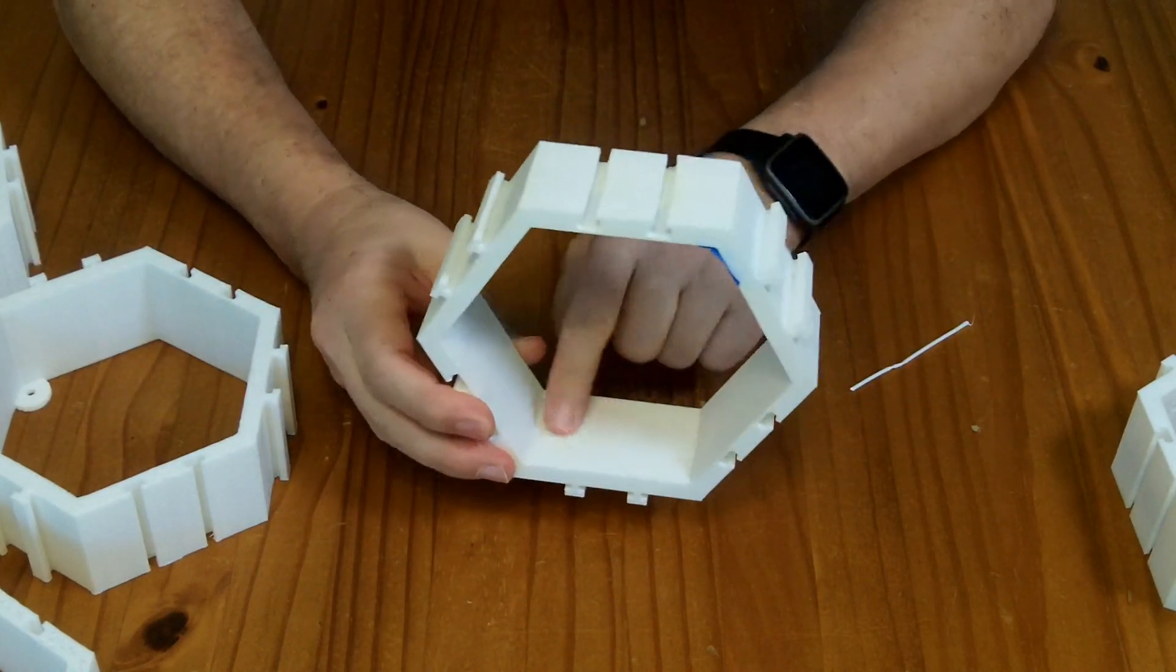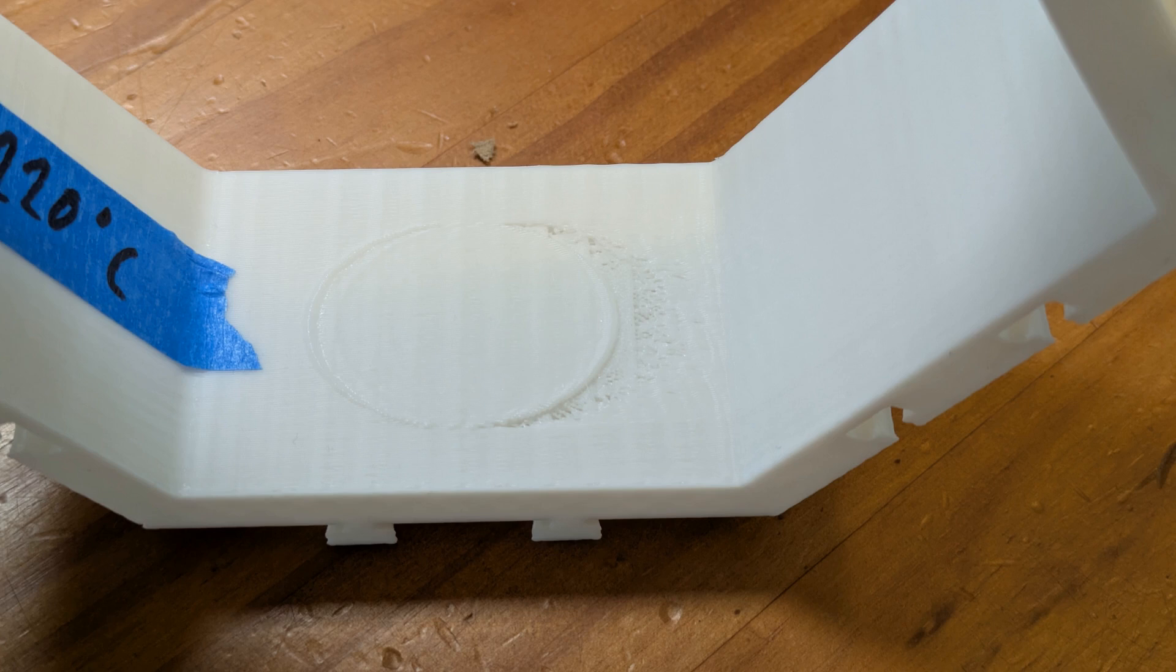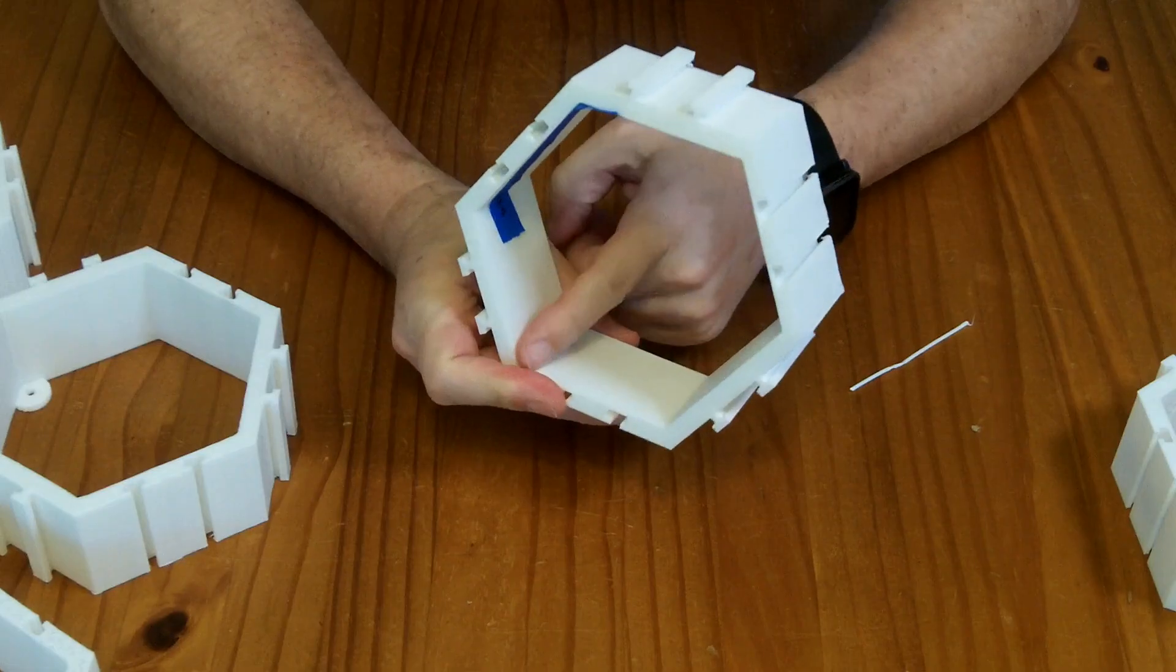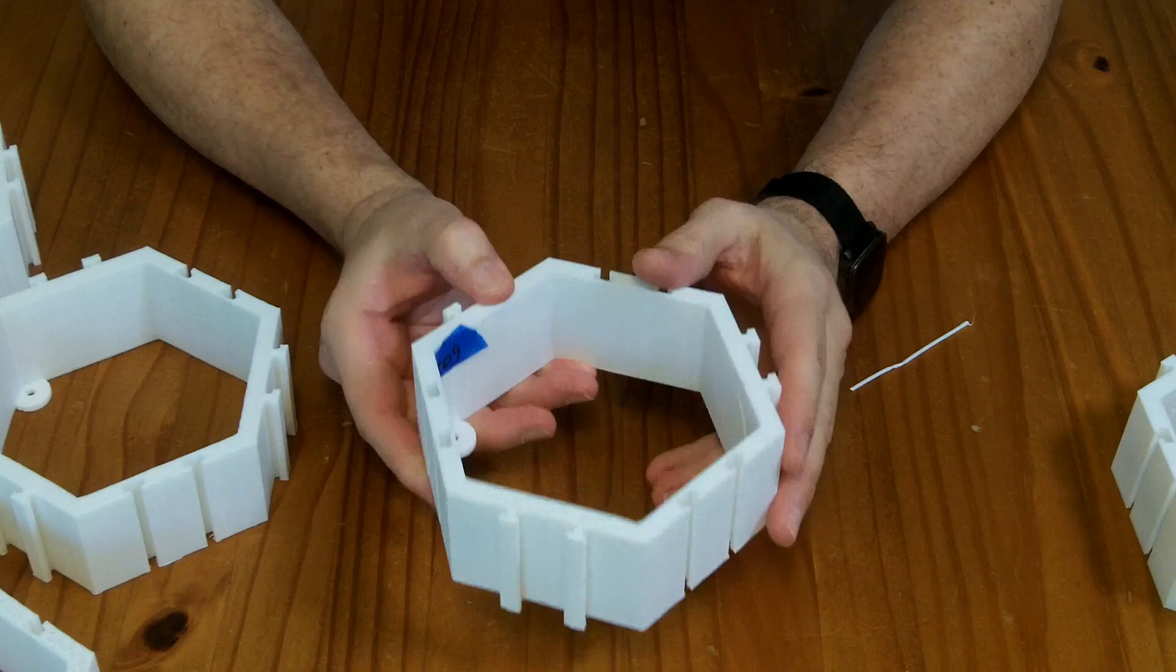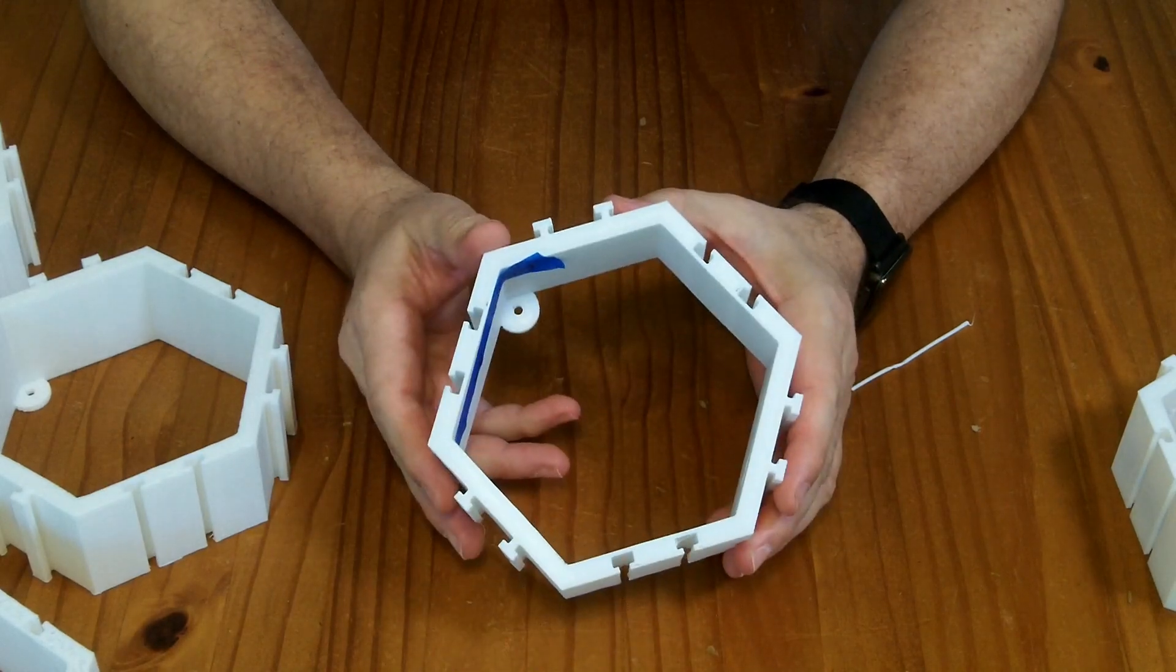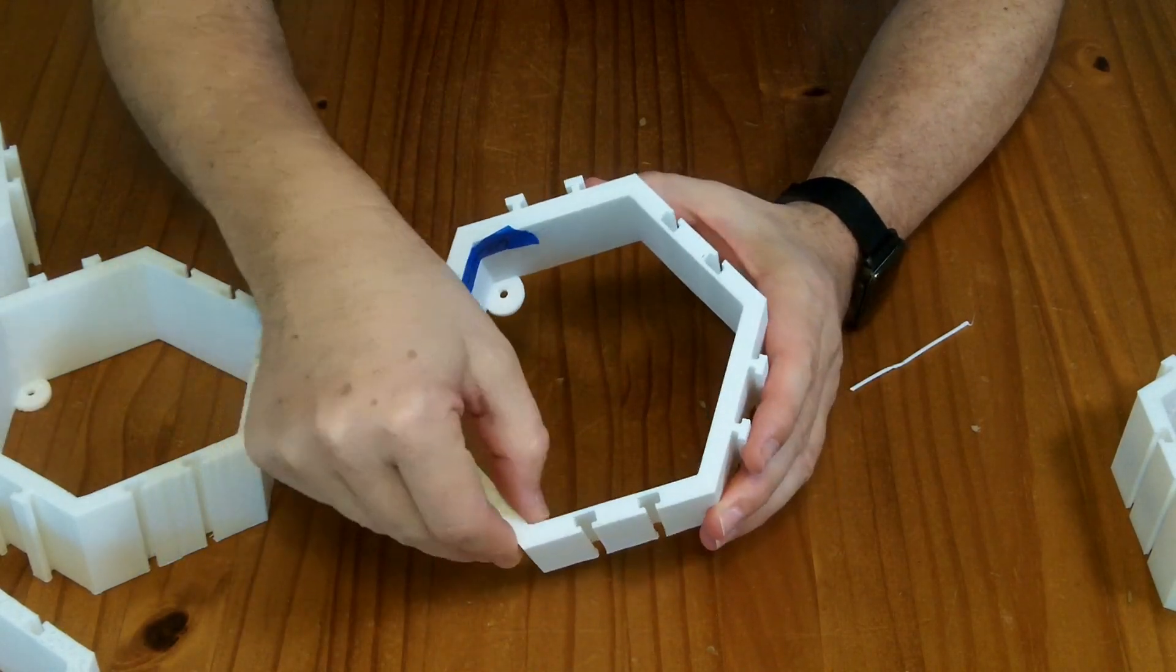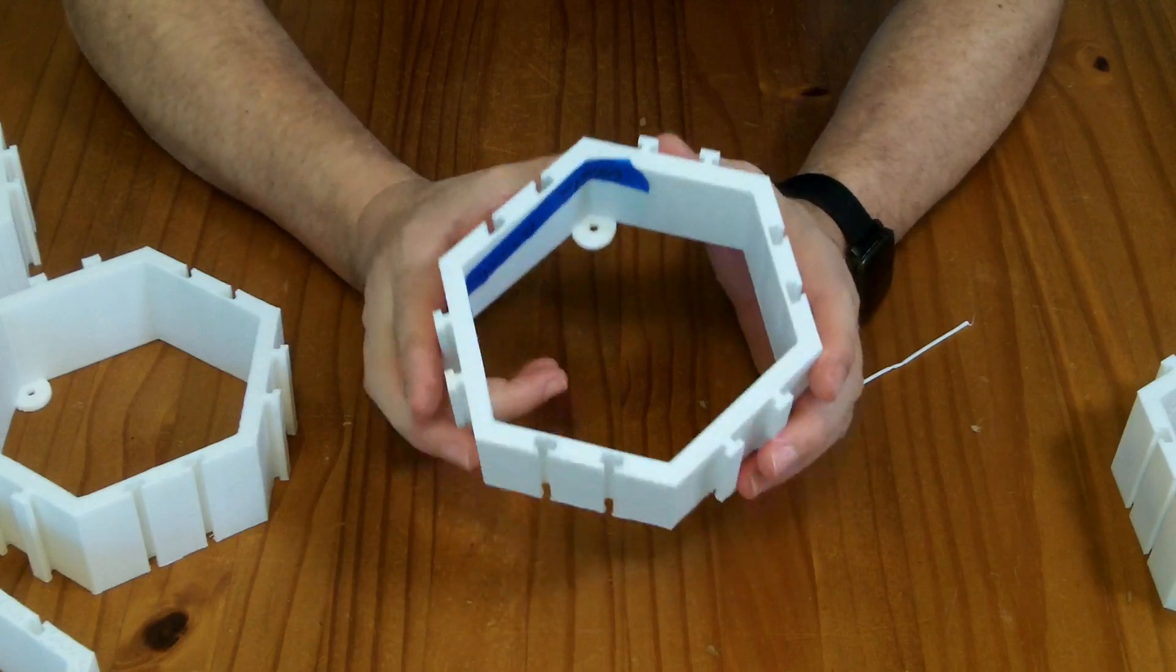I then went up to 0.3mm layer heights. That reduced this problem significantly because it's trying to push out more filament because the layer heights are bigger. It's still evident that there's a little issue there. I don't think that's a problem necessarily with the filament. I think that's more of a retract and extruder type setting that I could tune if I needed to.